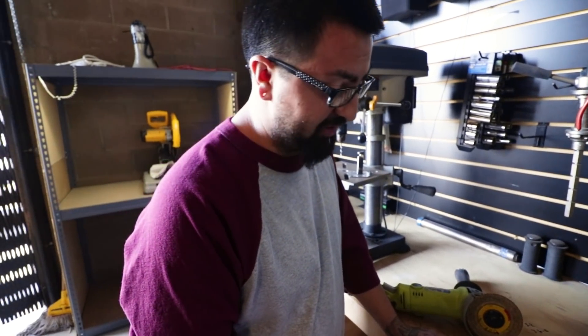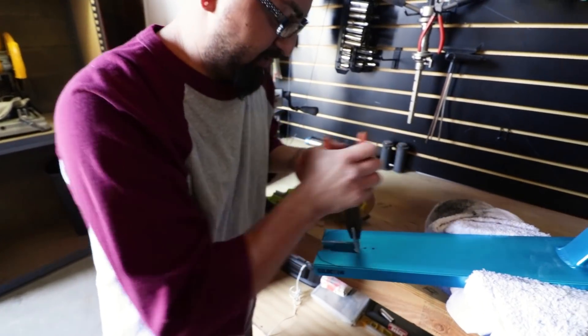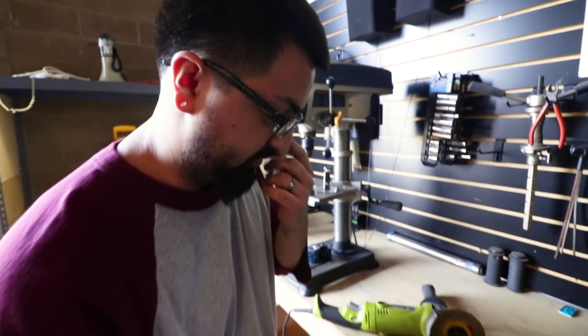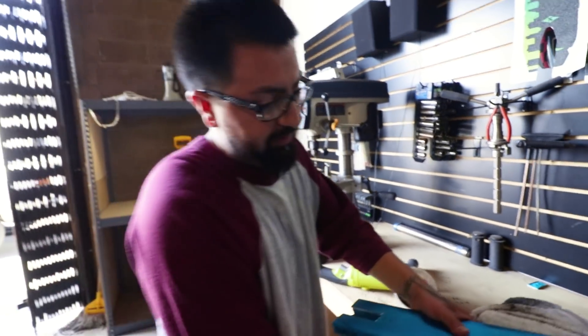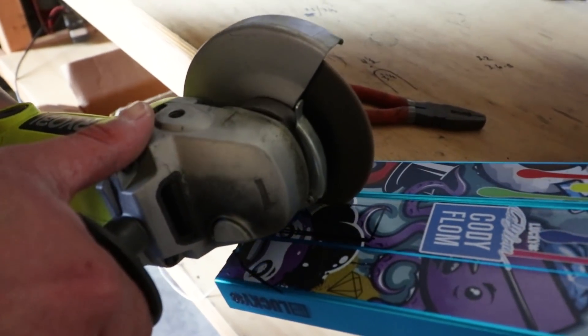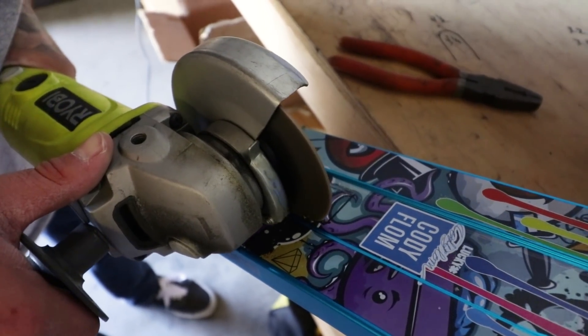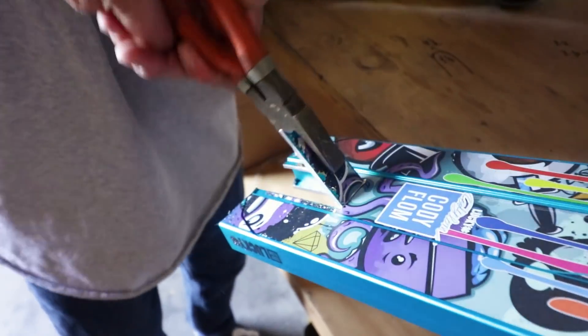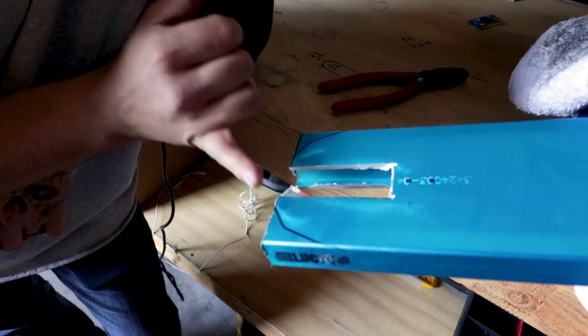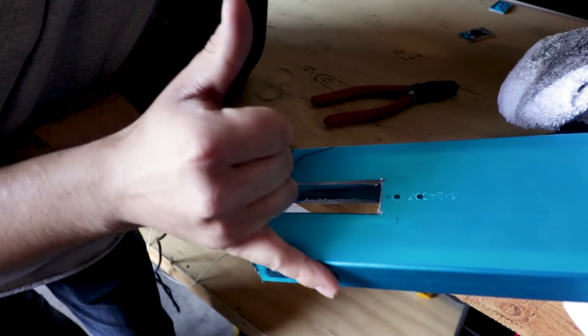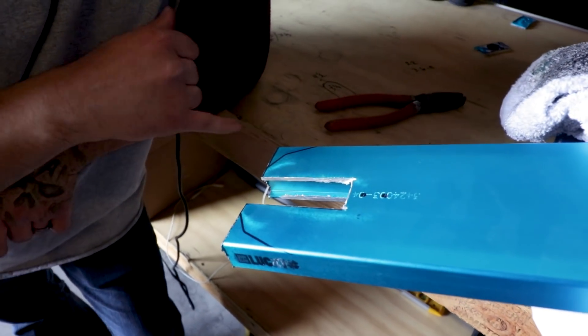So once you get this part done and just pry it off, you're done with that section. So let's start the bottom. Let's get the bottom done. What we'll do is we'll cut straight out, get that piece out of the way, and then we'll just have a free way of cutting this additional angle out of there.